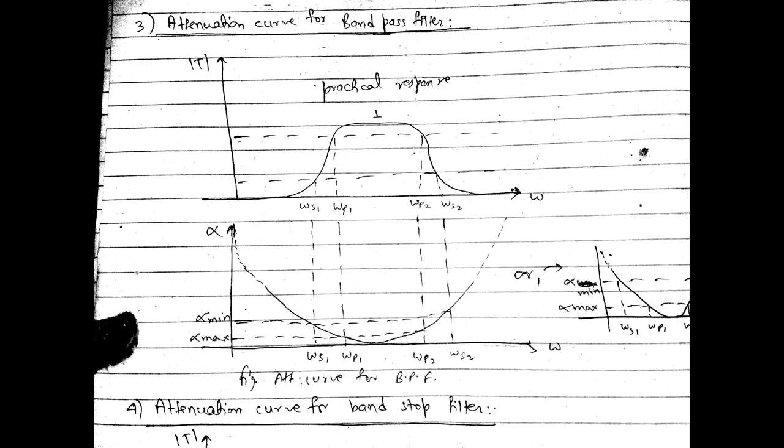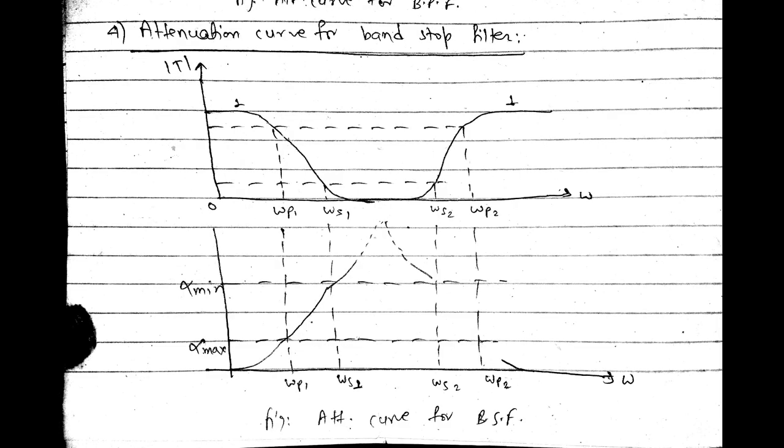For a band pass filter, if you know the practical response curve, the attenuation curve is just its inverse. From 0 to ωs1 the attenuation decreases; from ωs1 to ωp1 it decreases further; from ωp1 to ωp2 it attains an approximately zero value. The same logic applies for band stop filter. Remember to track αmin, αmax, ωp, and ωs carefully for each filter type.